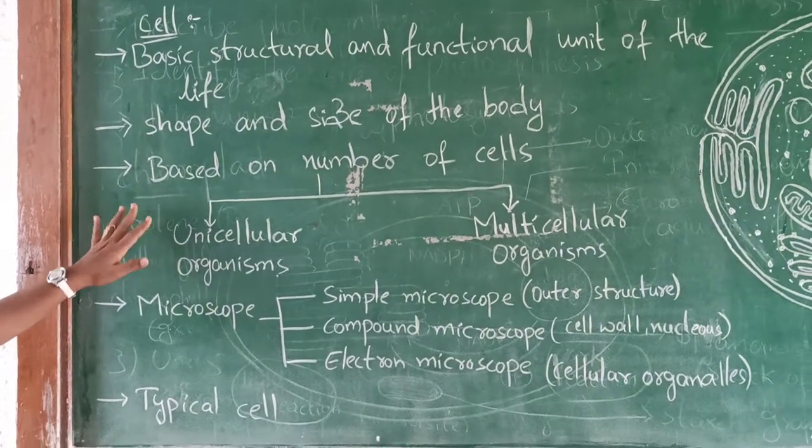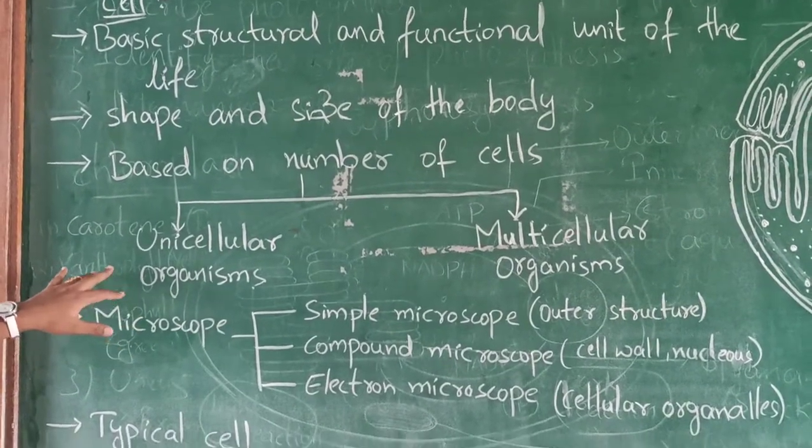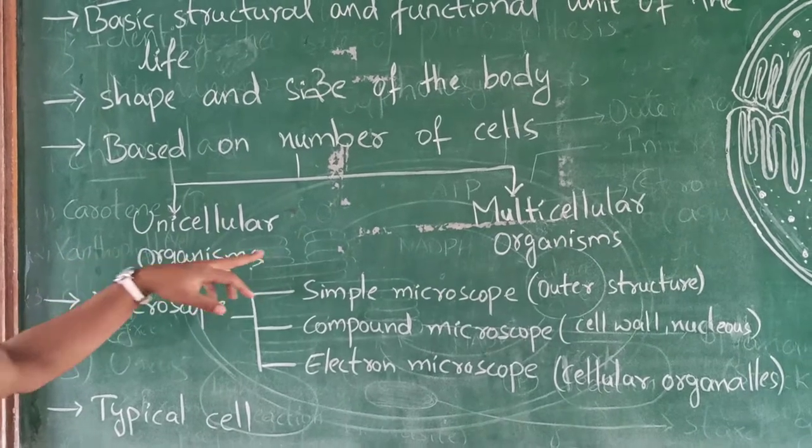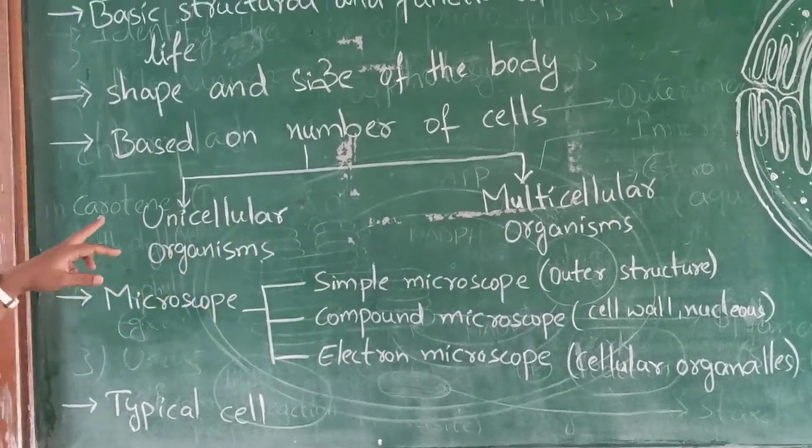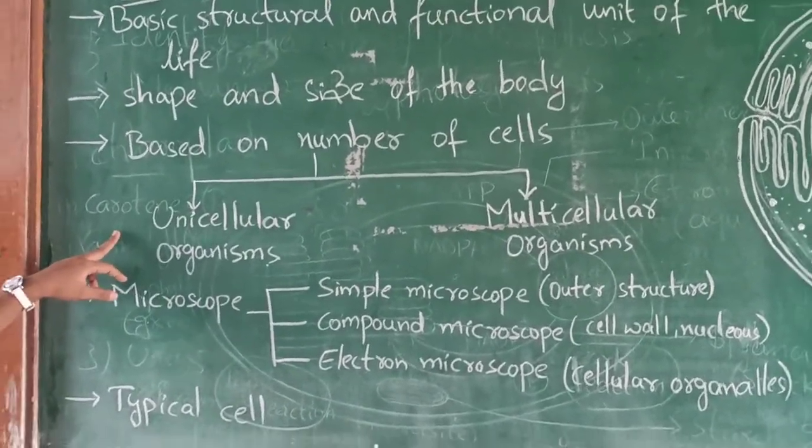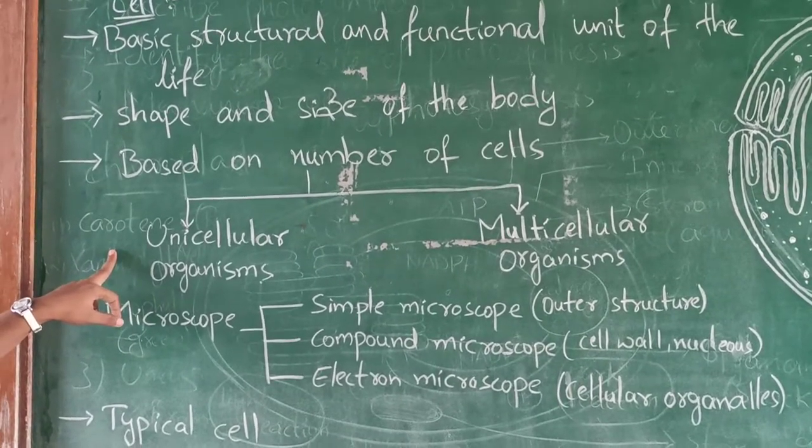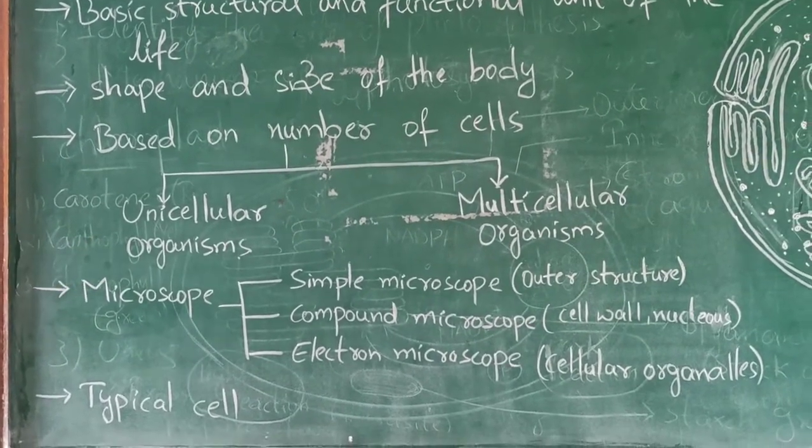Based on number of cells, we have two types of organisms, that are unicellular organisms and multicellular organisms. Unicellular organisms means it is having only one cell, for example, amoeba.